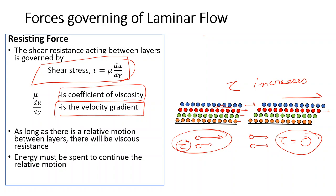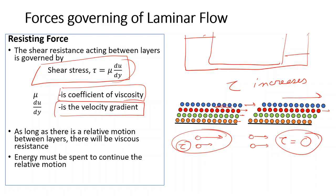As water travels from a high-energy tank to a low-energy tank through a pipe, the total energy decreases. The energy level was higher at the source, and while travelling through the pipe, the fluid loses that energy, arriving at a lower energy level at the destination. So that energy must be spent to maintain the flow against viscous resistance.